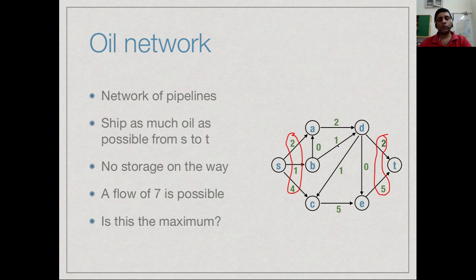We can verify this locally by checking conservation at each node. For instance, at d the total quantity flowing in is 2 plus 1 equals 3, and the total flowing out is also 2 plus 1 equals 3, so nothing is stored. This confirms it is a valid flow with total amount 7, but the question is: is this the maximum?